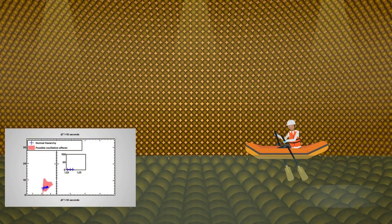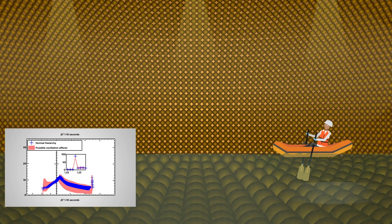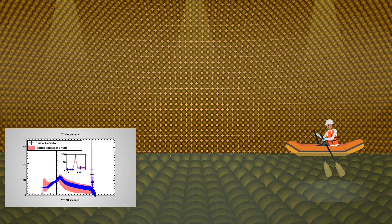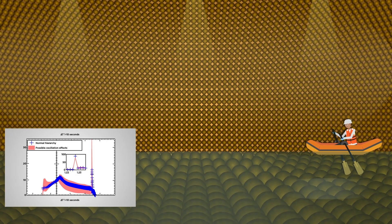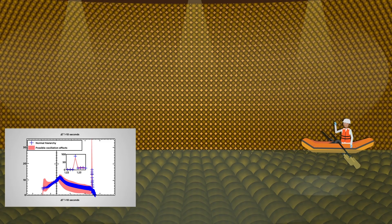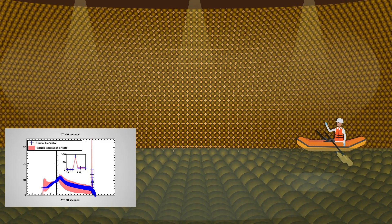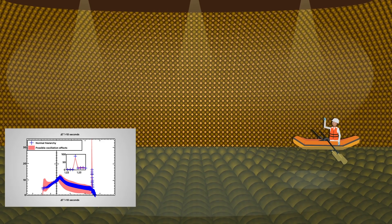Supernova events like this could be observable consisting of two detectable neutrino bursts separated by a few seconds. The first from the conversion to nuclear matter and the second from the formation of a quark matter core. Such observations would prove the existence of quark matter in heavy pulsars and explain their origin.